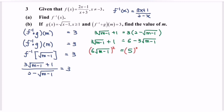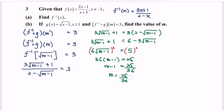Square both sides to eliminate the square root: 36 times (m minus 1) equals 25. So m minus 1 equals 25 over 36, and m equals 25 over 36 plus 1, which gives m equals (25 plus 36) over 36. Finally, m equals 61 over 36.